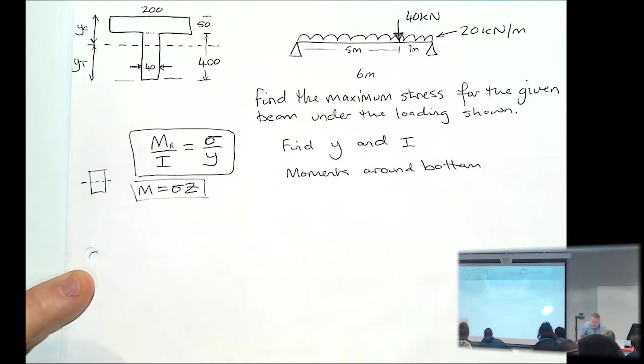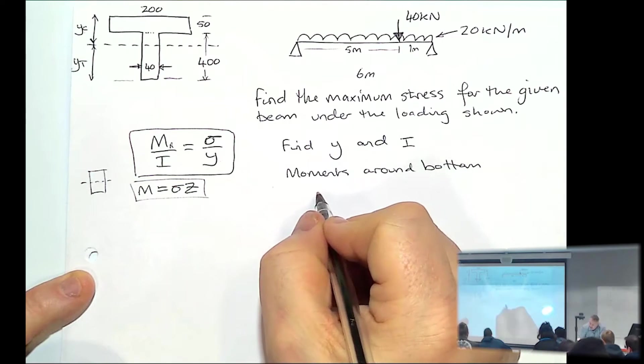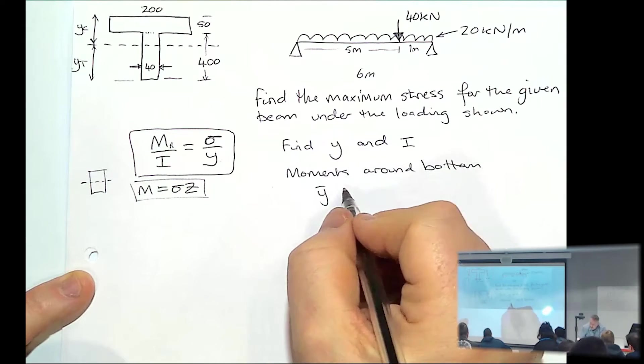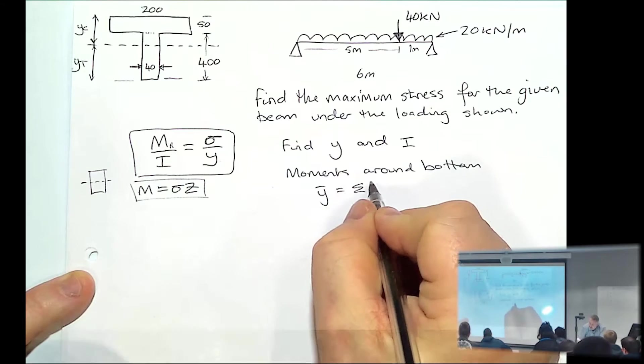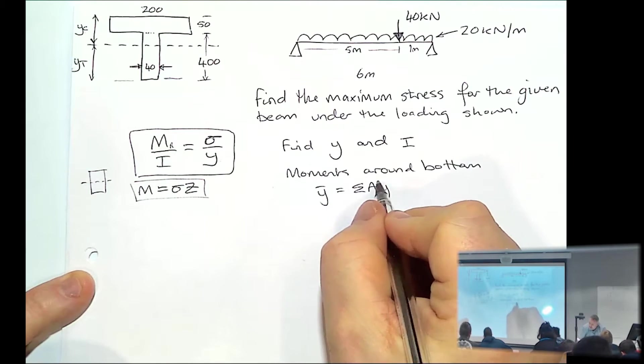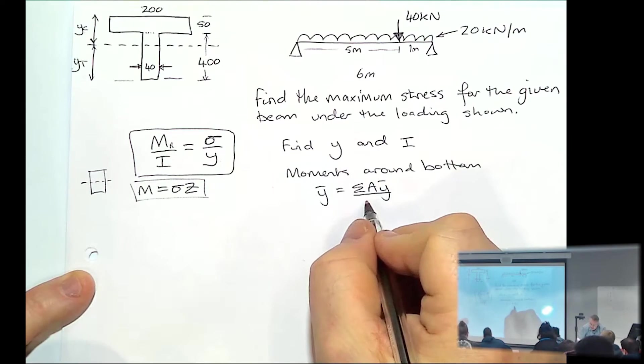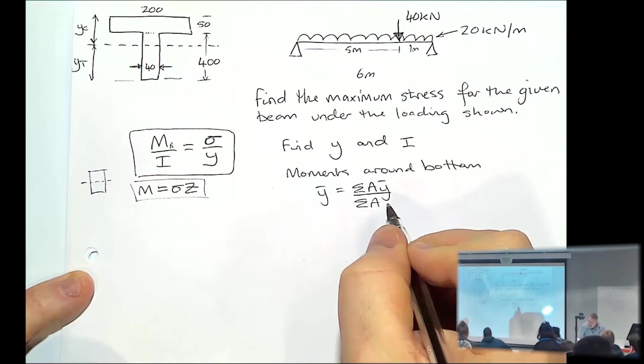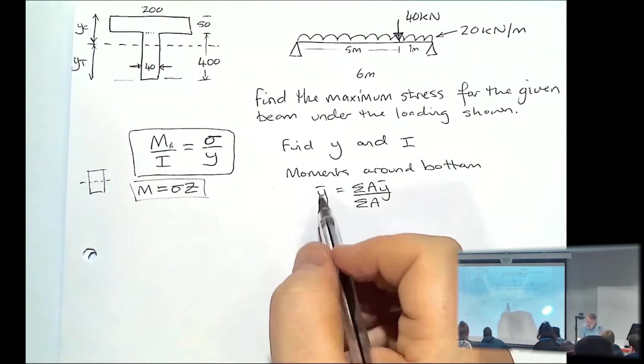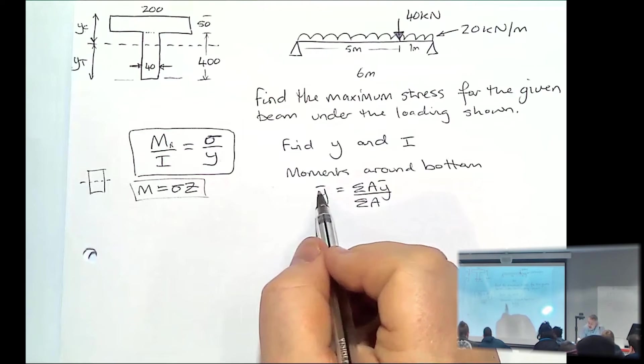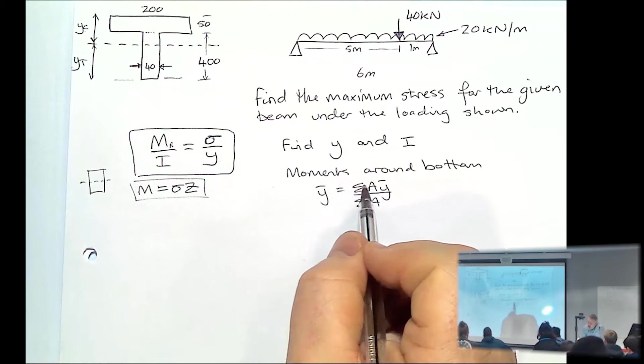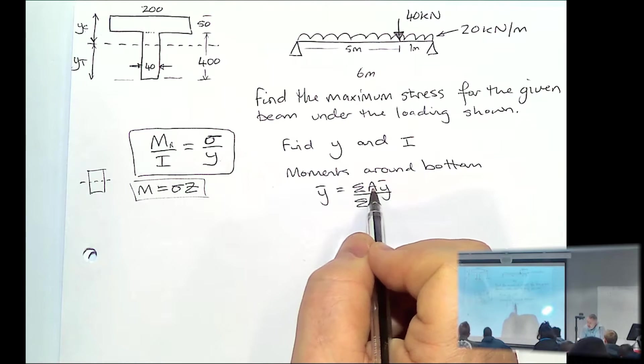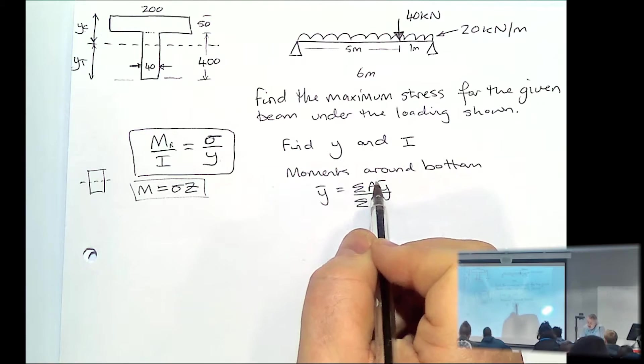And from your handout, you can pick off the formula for a second moment of area. Which is the total area times by Y bar equals the sum of the Y bar times by the individual area components.